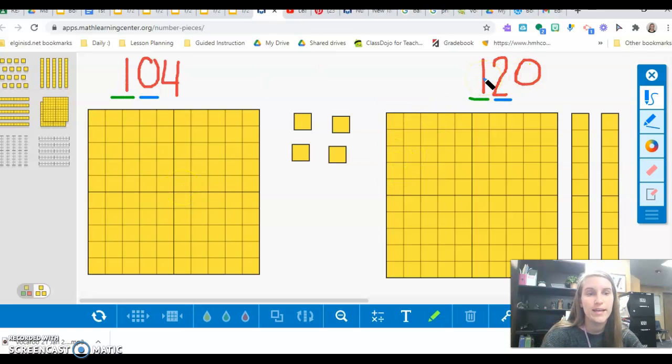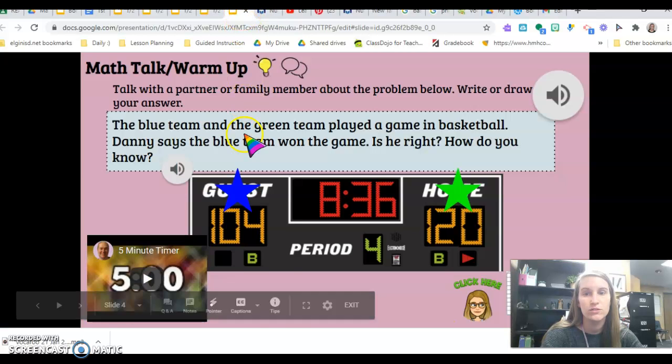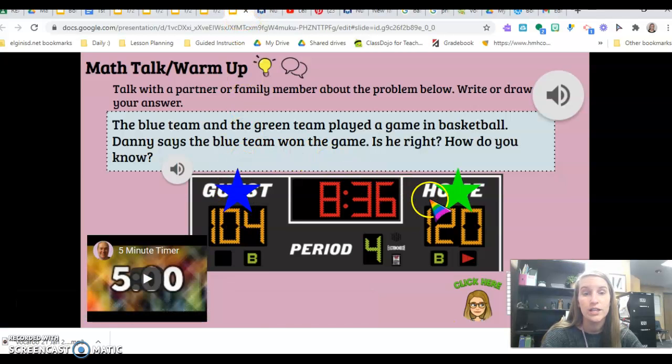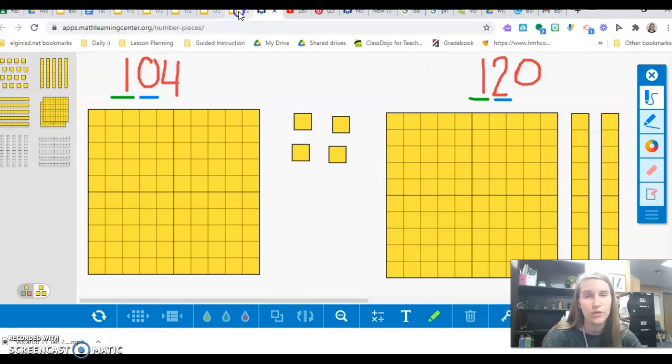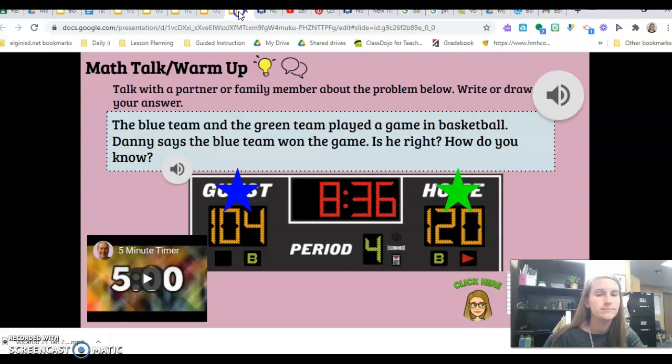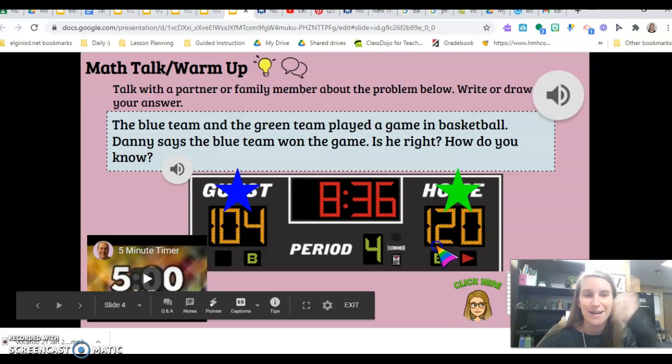So 120 is, let's see, 104 was the blue team. 120 was the green team. If we said 120 is the greater number, which team won? The green team. So is Danny correct? Nope, not this time. So we need to make sure we tell him that it's the green team that won. Great job. Give me a thumbs up if that is the answer that you also got.